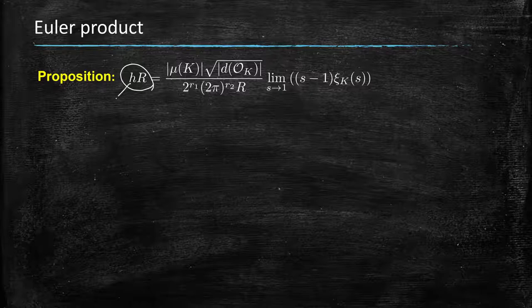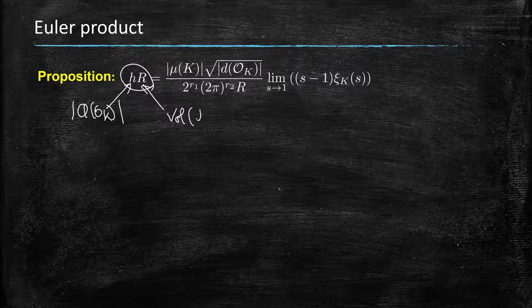...where h is the cardinality of the class group, and r is this volume that we just defined. So we know how to anticipate...